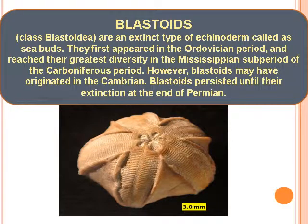Blastoids, class Blastoidae, are an extinct type of echinoderm called as Sea Birds. They first appeared in the Ordovician period and reached their greatest diversity in the Mississippian sub-period of the Carboniferous period. Blastoids may have originated in the Cambrian and persisted until their extinction at the end of the Permian.